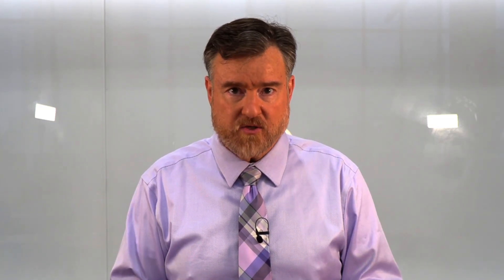To explain this, let me go back to something that we already know about, which is a frequency distribution. A frequency distribution is a count of all outcomes that a random variable can assume. You see in the first column, we have the word outcome and then numbers representing potential outcomes for the question, how many tests out of four did you pass?